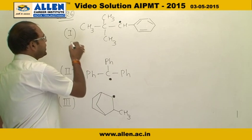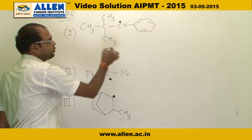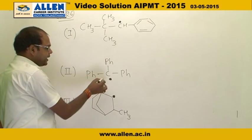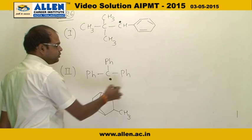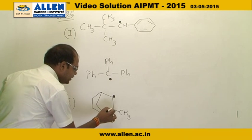In structure number one, there is a carbon radical with no alpha hydrogen, so there is no hyperconjugation. In structure two, again there is no alpha hydrogen, so there is no hyperconjugation.